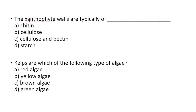The xanthophyte cell walls are typically composed of which of the following? Option A: Chitin, Option B: Cellulose, Option C: Cellulose and Pectin, Option D: Starch. Answer: Cellulose and Pectin.